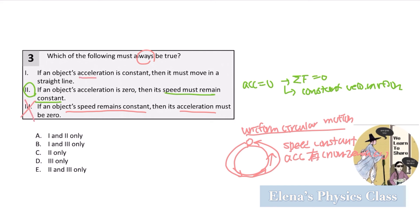And also, when the acceleration is constant, it must move in a straight line. It's wrong, because the acceleration over here also remains constant, but you can see how it moves in a circular motion, not in a straight line.